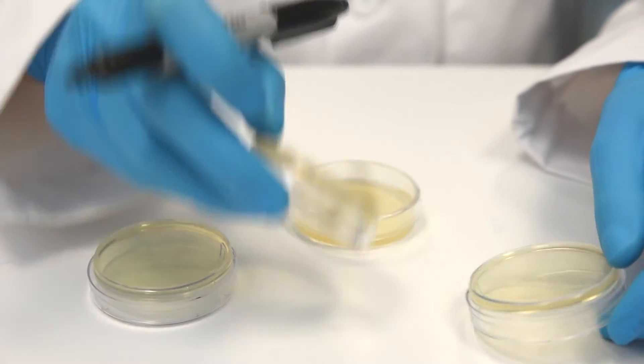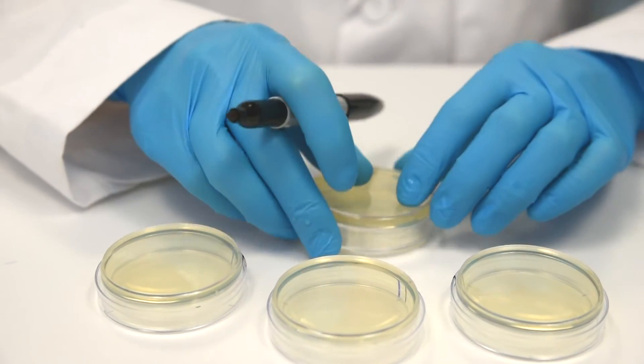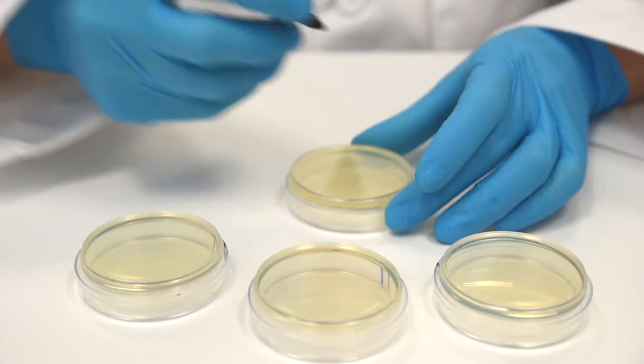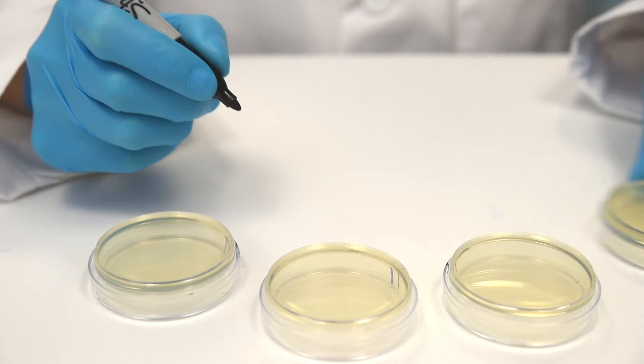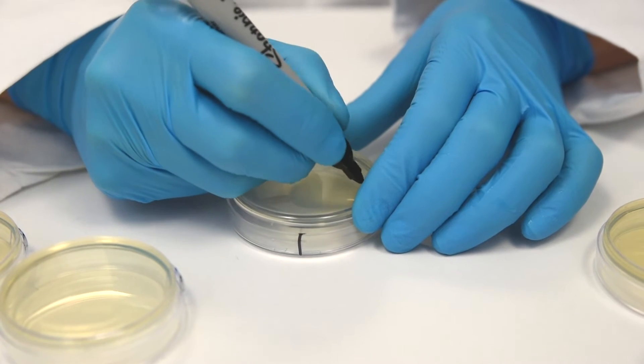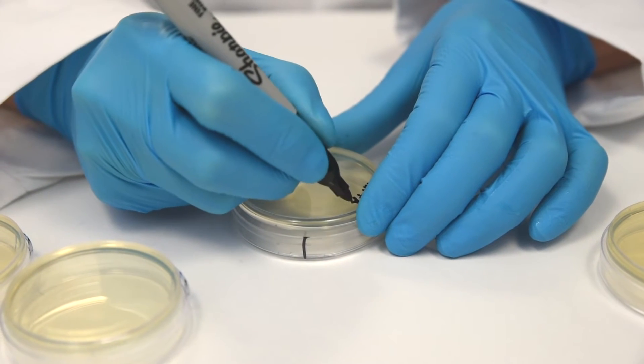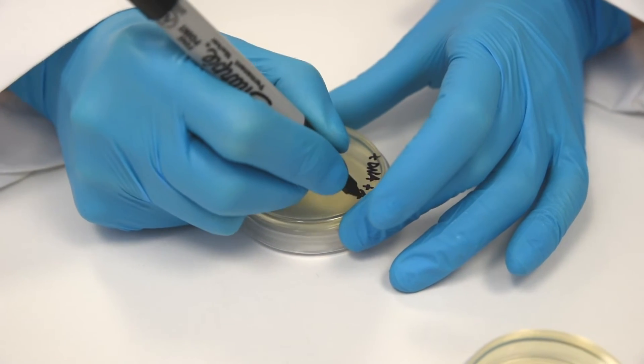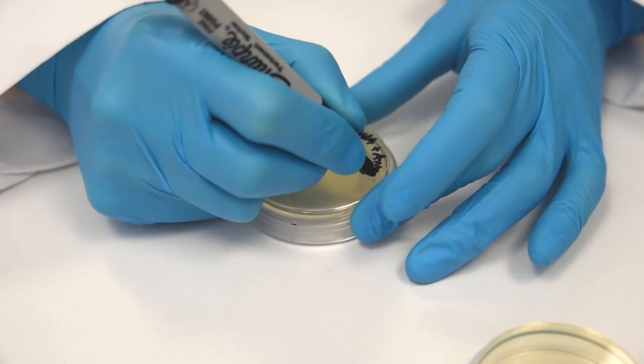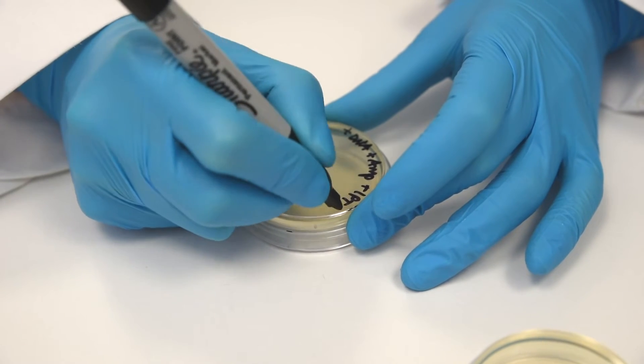Step 11. While the tubes are recovering, label the bottom of four agar plates as follows. Label the plate with no stripe as minus DNA. Label the plate with a single stripe as minus DNA plus amp. And finally, label both striped plates as plus DNA plus amp plus IPTG.